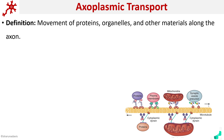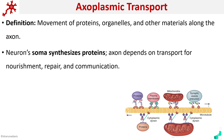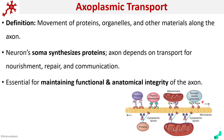A neuron has got an axon as well as a soma, and it is the neuron soma that synthesizes the proteins. Axons must depend on this transport — axoplasmic transport — for nourishment, repair and communication. It is essential for maintaining the functional and anatomical integrity of the axon.